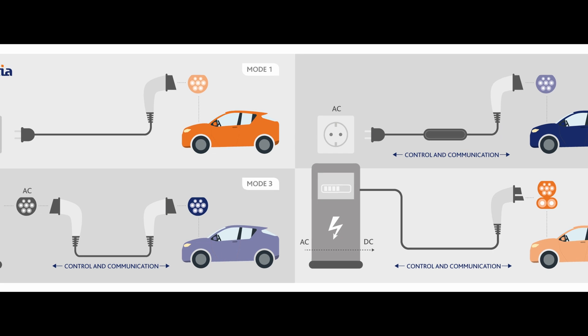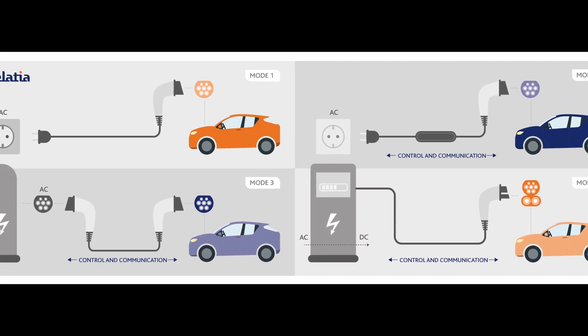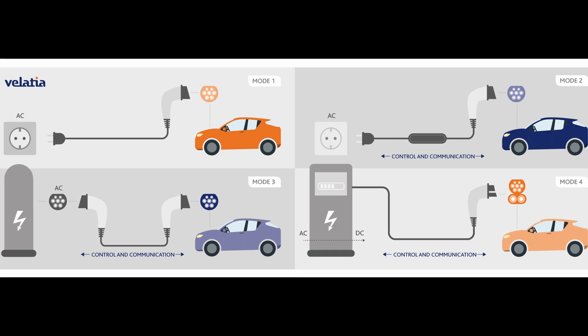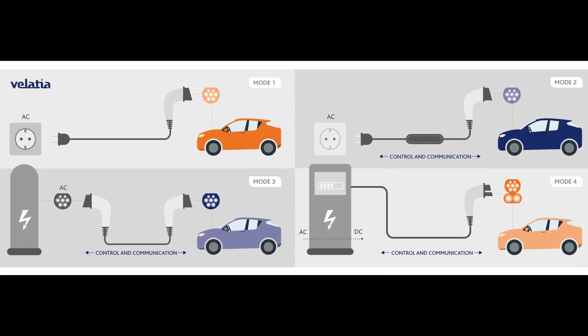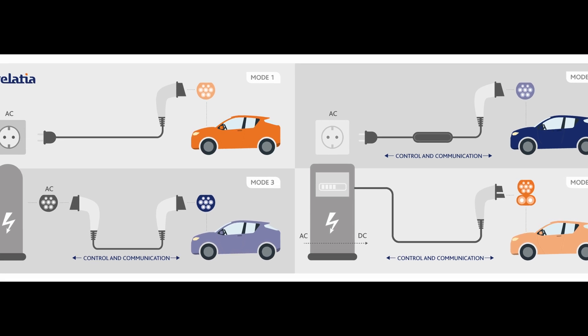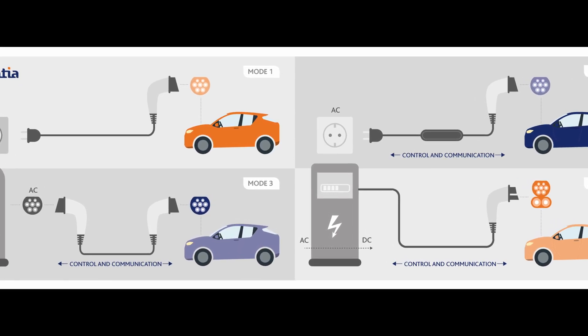We describe four modes in the standard using international terminology for EV charging. Modes one and two are plug-in charging devices and are not permitted for reverse power, so we largely ignore them in this context. Mode three is where you have an AC EVSE on the wall that you plug into your vehicle. Mode four is a DC connection directly from the vehicle to the installation — generally what people think of as fast charging — and both mode three and mode four allow power flow.